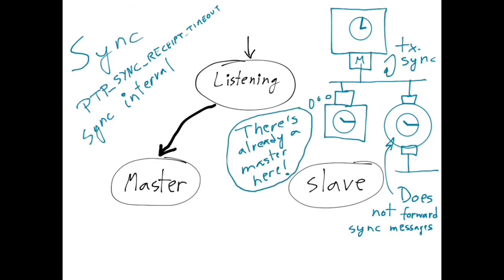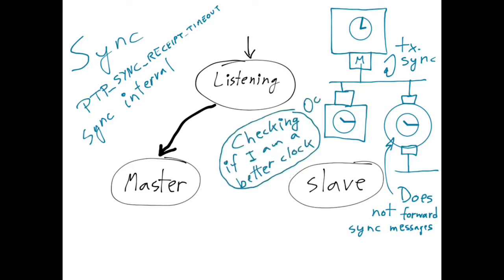The next thing that happens is that the new clock compares itself with the current master. For this, it uses information that is conveyed in the periodic sync messages. For instance, it might check whether it has a higher quality oscillator.